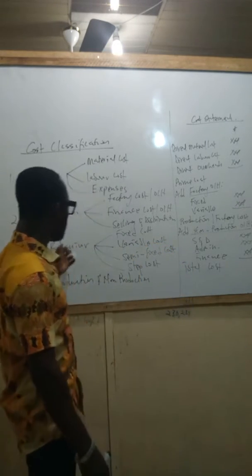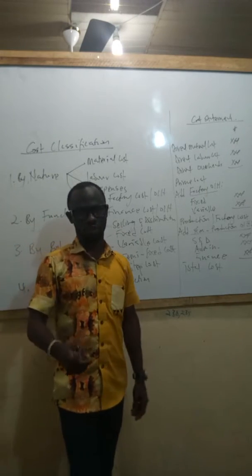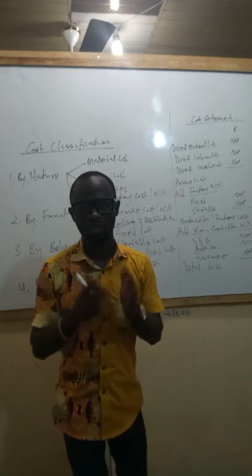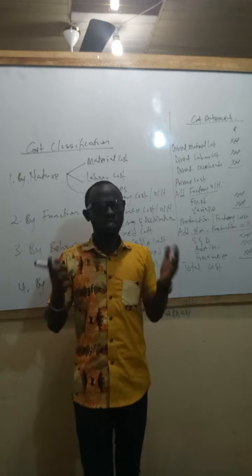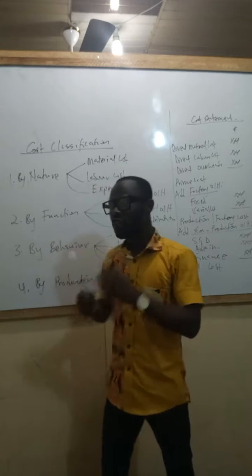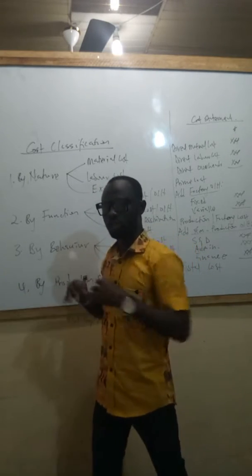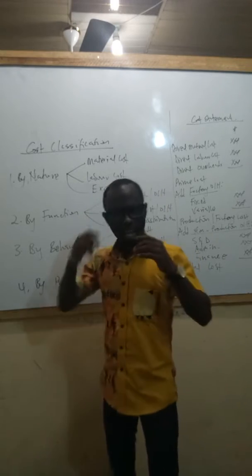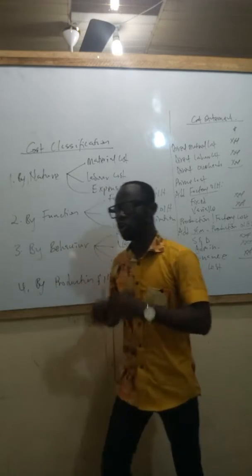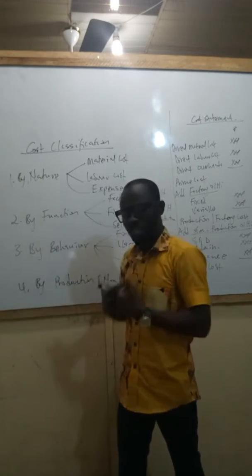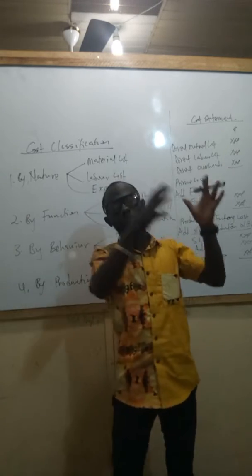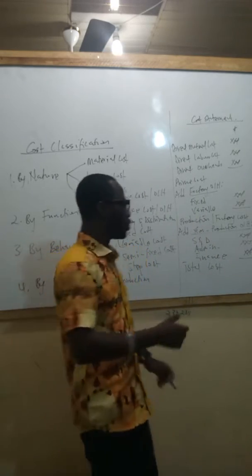Under classification of cost according to behavior, the first thing has to do with fixed costs. Fixed costs are costs that remain the same irrespective of the output level. For instance, if you start a business, you will begin to incur fixed costs — fixed cost starts even when output is zero. When you start a business, the office you're going to be renting, the equipment you'll be buying, even though you've not started receiving or serving clients — those things you have to put in place before your business runs become the fixed cost.